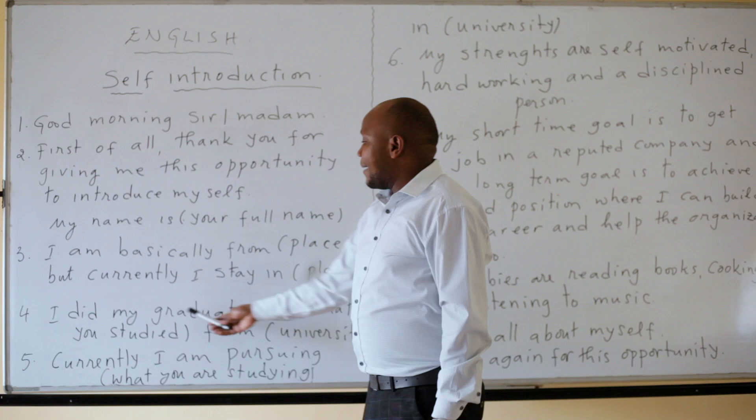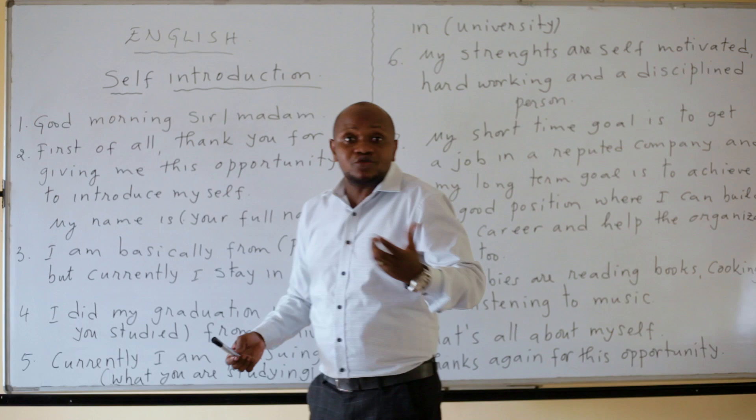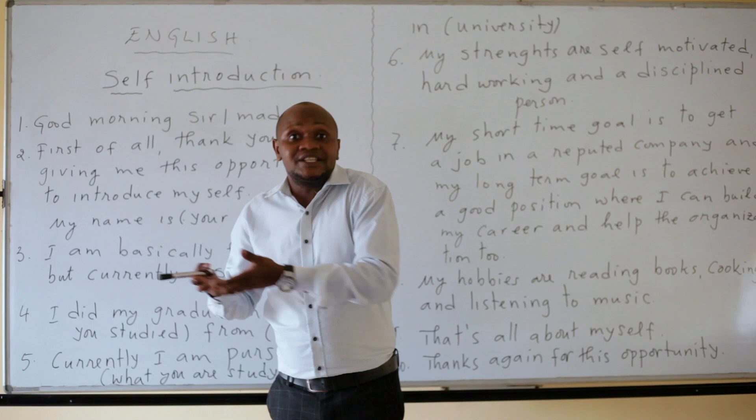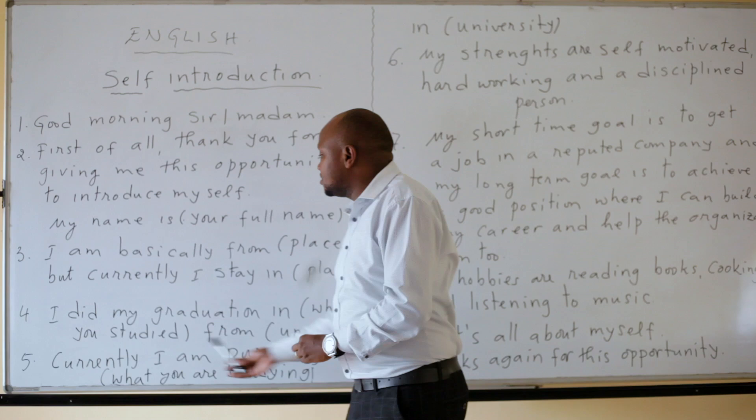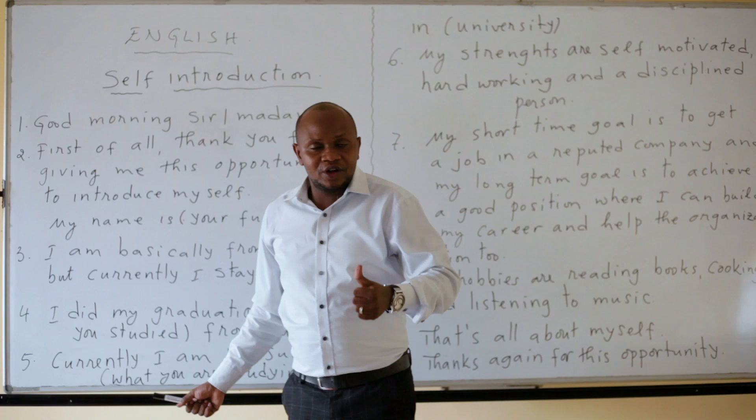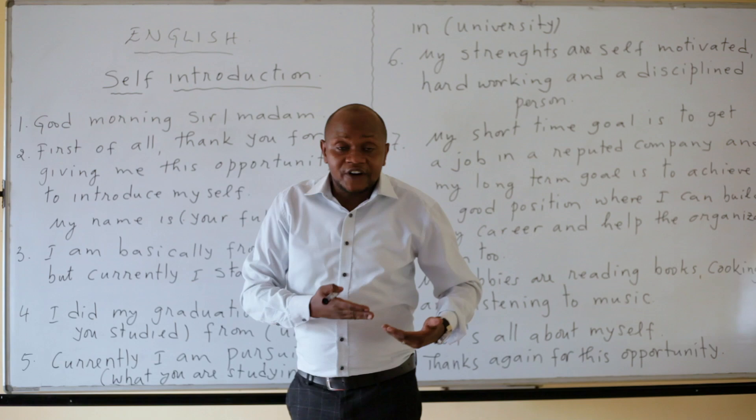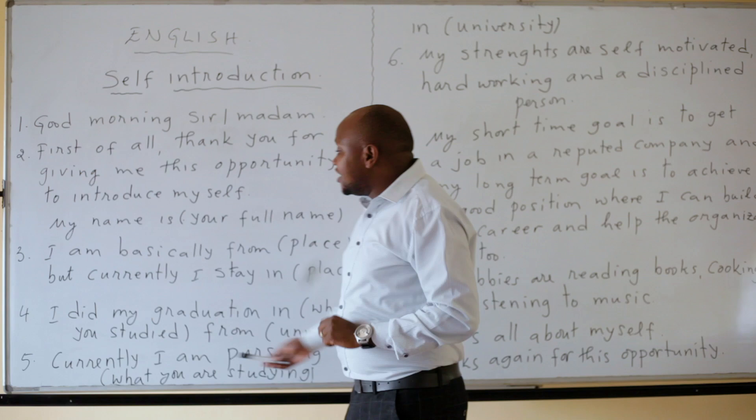Step number four: I did my graduation in — then you mention what you studied, for example, Bachelor of Science in Languages. You say I did my graduation in what you studied, from the university you attended — for example, from the University of Rwanda. You include the field of study and the name of your institution.